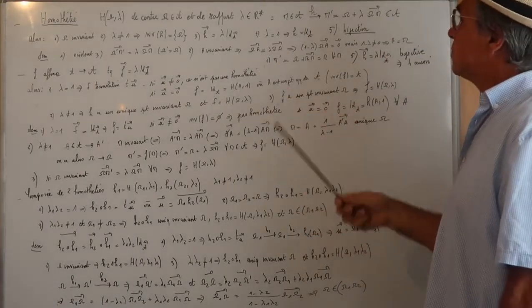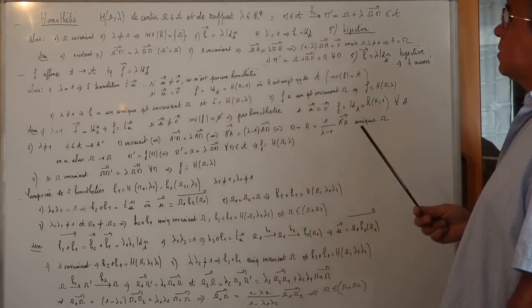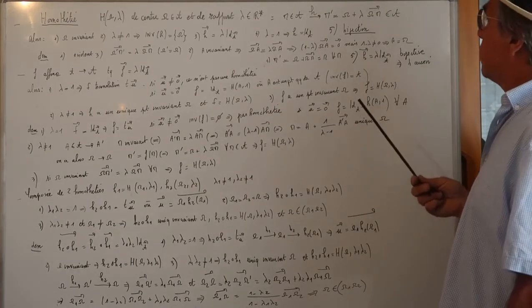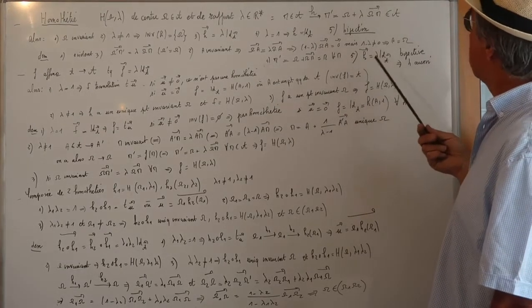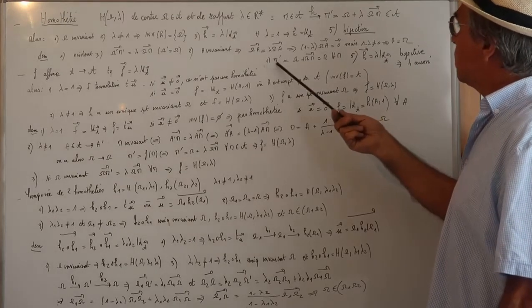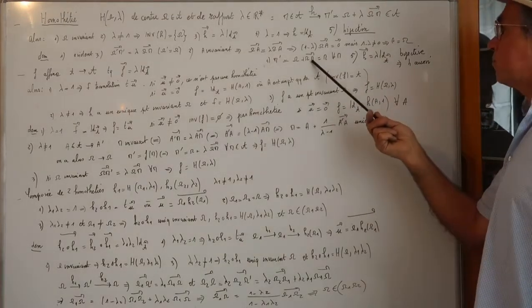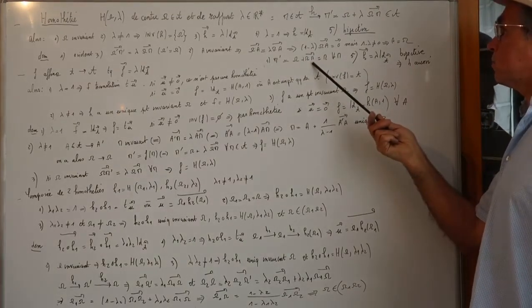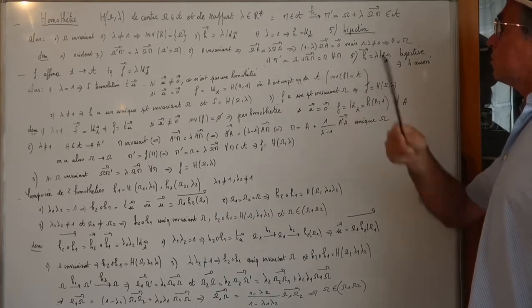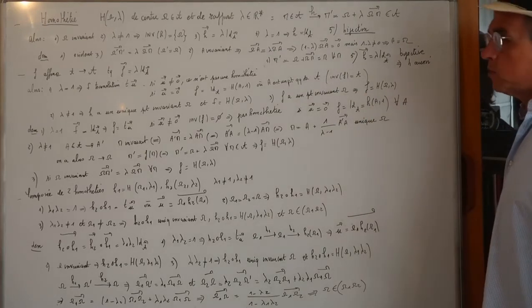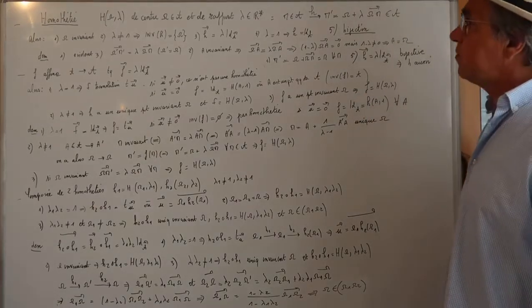Si λ = 1, alors M' = Ω + vecteur ΩM = M pour tout M, donc l'homothétie est l'identité. Seconde propriété : soit F une application affine dont la partie linéaire est une homothétie vectorielle de rapport λ ≠ 0. Si λ = 1, c'est une translation. Si le vecteur de translation est non nul, ce n'est pas une homothétie. Si le vecteur est nul, F est l'identité.